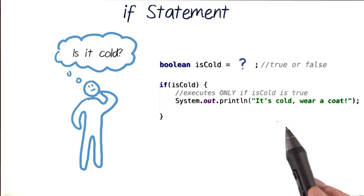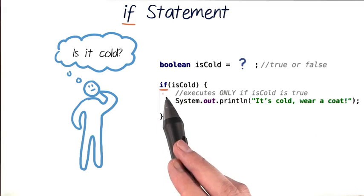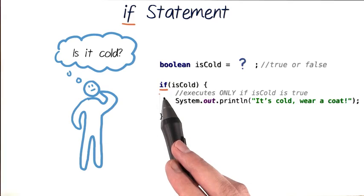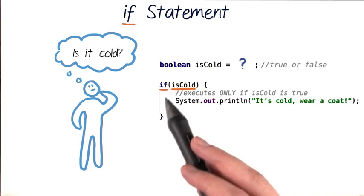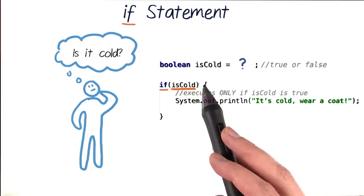Let's look at our decision making code first. We have an if that starts our if statement, followed by the information our program needs to make a decision. This will tell us whether it's cold outside or not, and it's inside these parentheses.